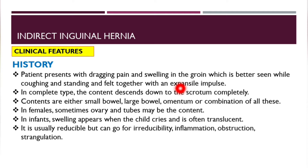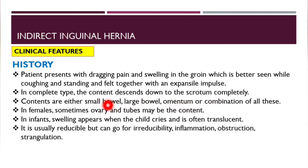Regarding clinical features, the patient presents with dragging pain and swelling in the groin, which is greater while coughing and standing and felt together with an expansile impulse. In the complete type, the contents descend down to the scrotum completely. The contents are either small bowel, large bowel, omentum, or a combination. In females, the ovary and tubes may be the content. In infants, swelling appears when the child cries and is often translucent. It is usually reducible but can become irreducible, with inflammation, obstruction, or even strangulation.